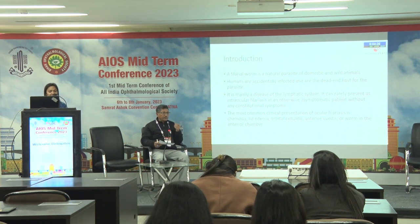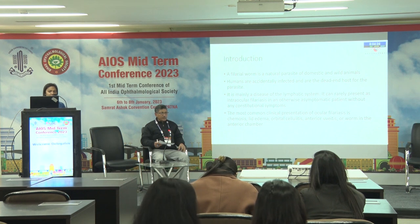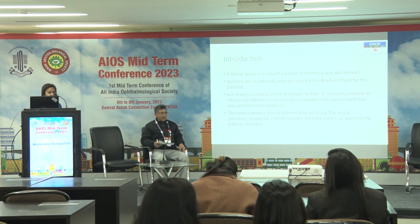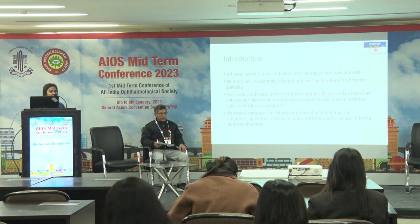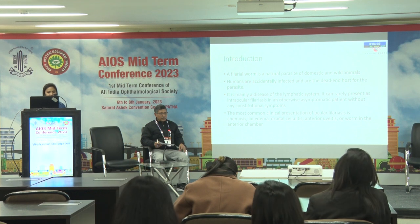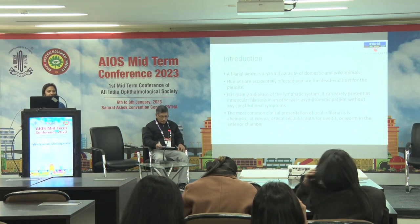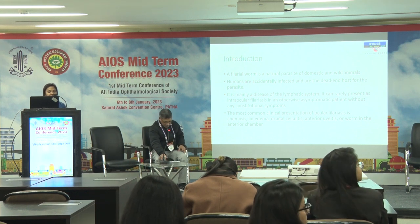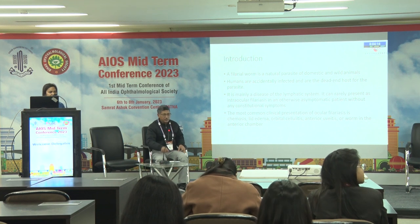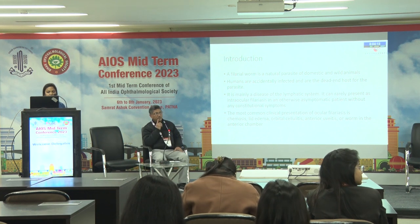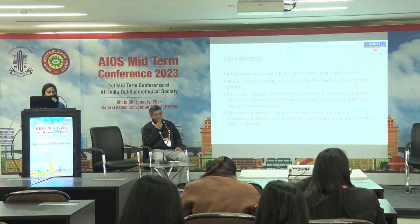A filaria worm is a natural parasite of domestic and wild animals. Humans are accidentally infected. It is mainly a disease of the lymphatic system, and it rarely presents as intraocular filariasis in otherwise asymptomatic patients without any constitutional symptoms.